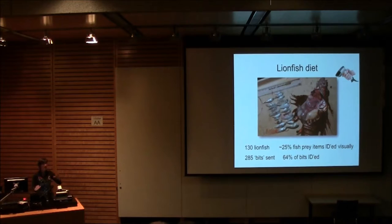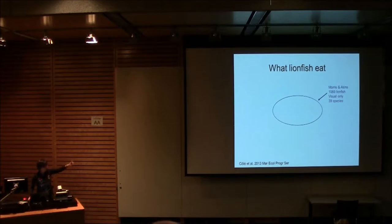We sent a bunch of bits to the DNA lab and literally this is the best bit of fieldwork I've ever done. Because about two weeks later, an Excel spreadsheet got sent back to me with 64% of these DNA bits identified to species. Like we had a really, really good picture now of what lionfish eat. So that egg or whatever that shape is called, that represents the 39 species that up until that point had been visually recognized in a very large survey of more than a thousand lionfish stomachs.